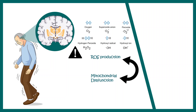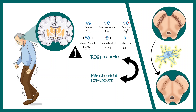Scientists also think that microglial activation may play a role in Parkinson's disease. Microglia might be a reason why dopaminergic neurons die, as they can destroy these neurons.